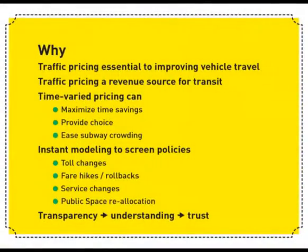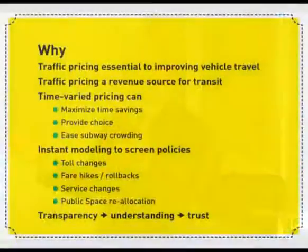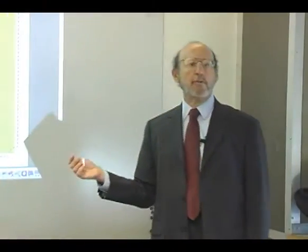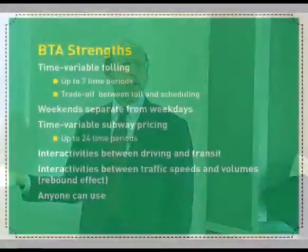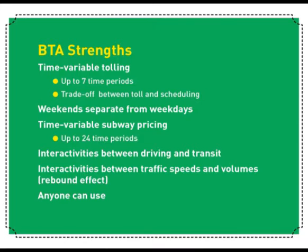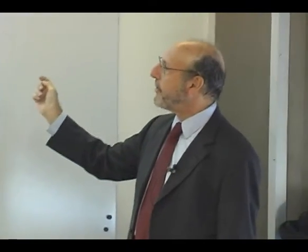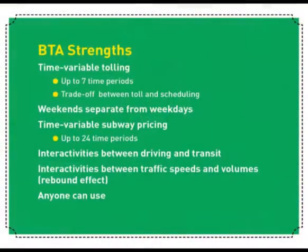The BTA also handles public space reallocation — we have a switch in the model that allows us to take any amount of street space out of service, away from vehicles, and then see how traffic speeds change in response. The notion is that by making this all transparent, you demystify the whole idea of traffic planning. The BTA's strengths include dividing the 24 hours into as many as seven different time periods, weekends separate from weekdays, time-variable subway pricing, and interactive modeling components.